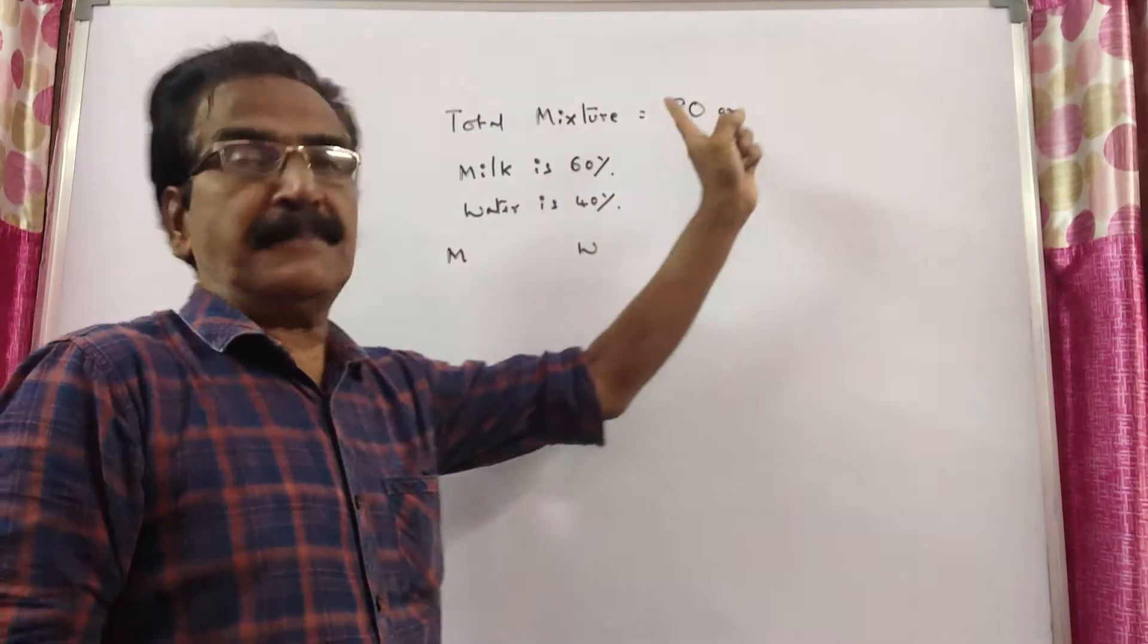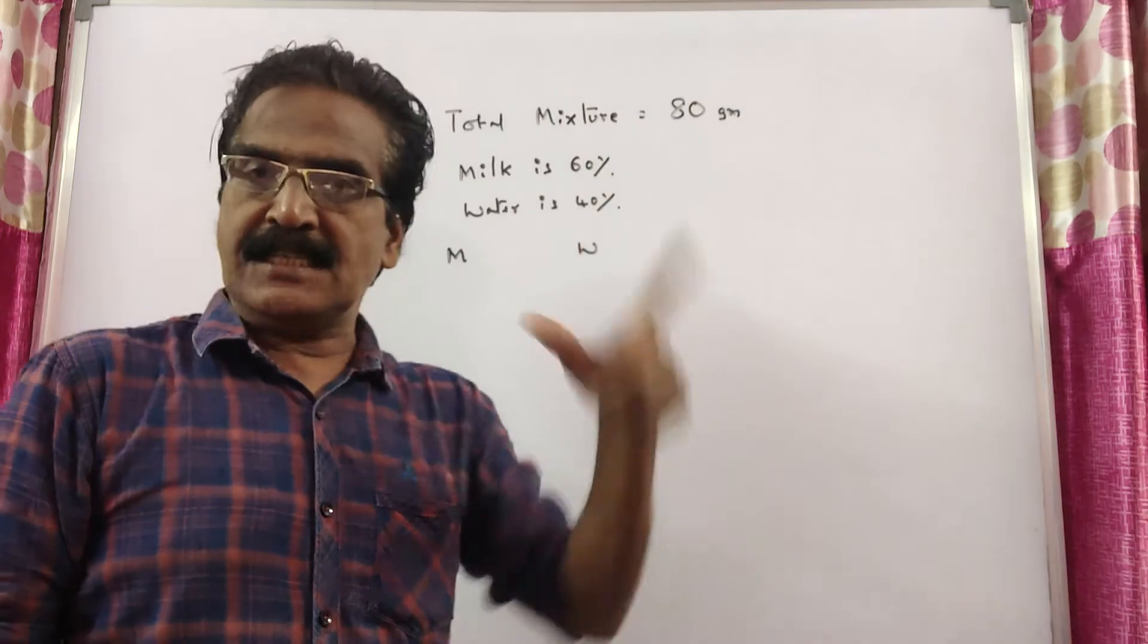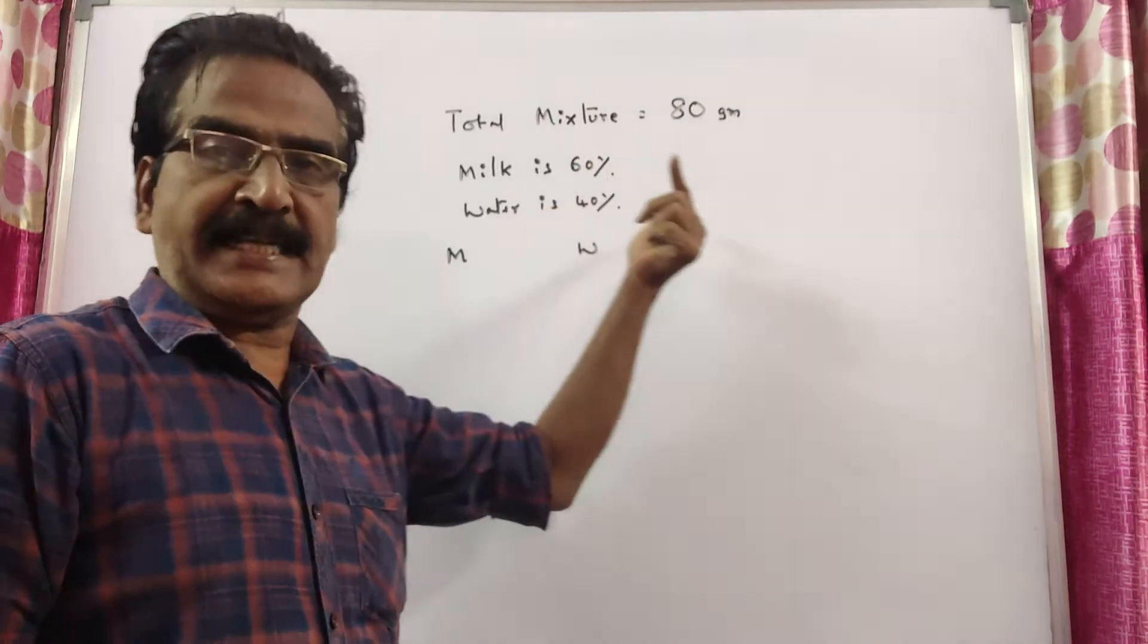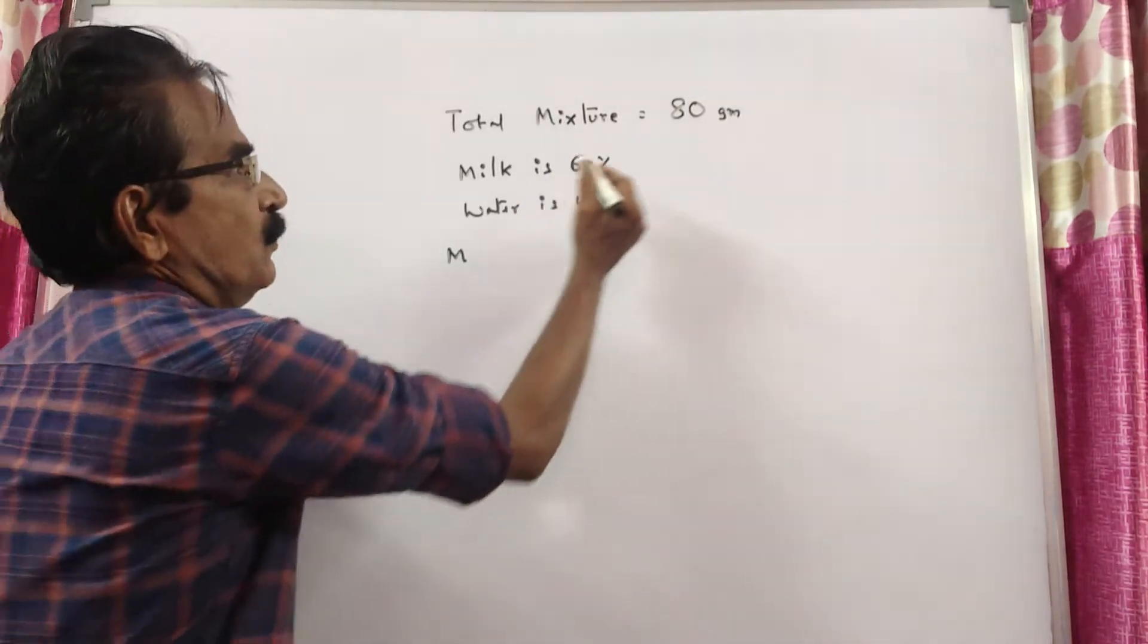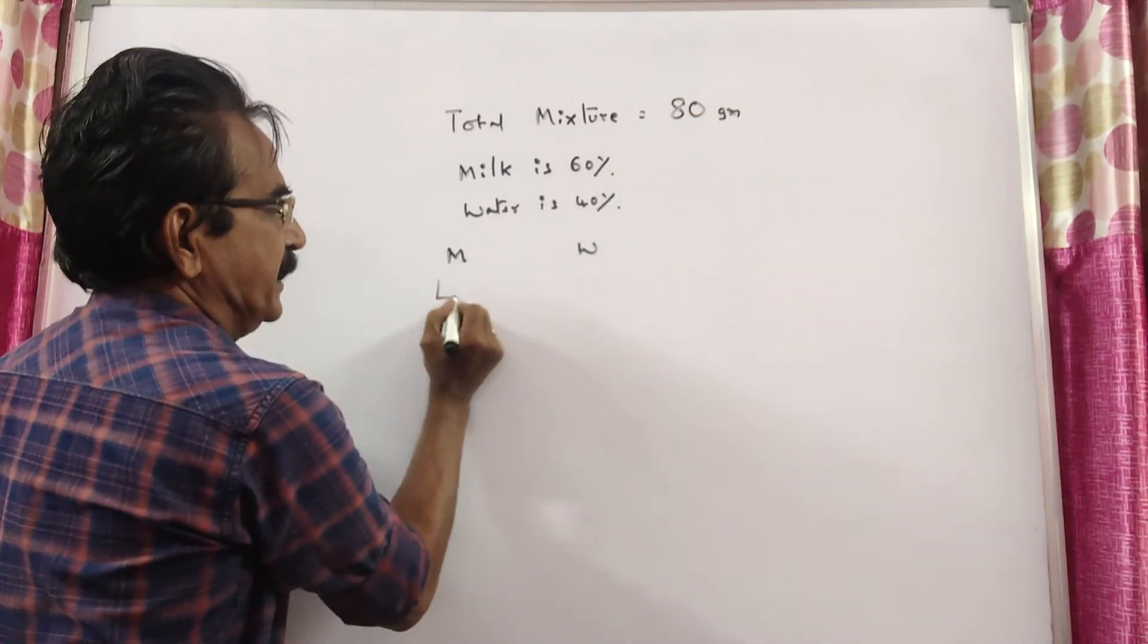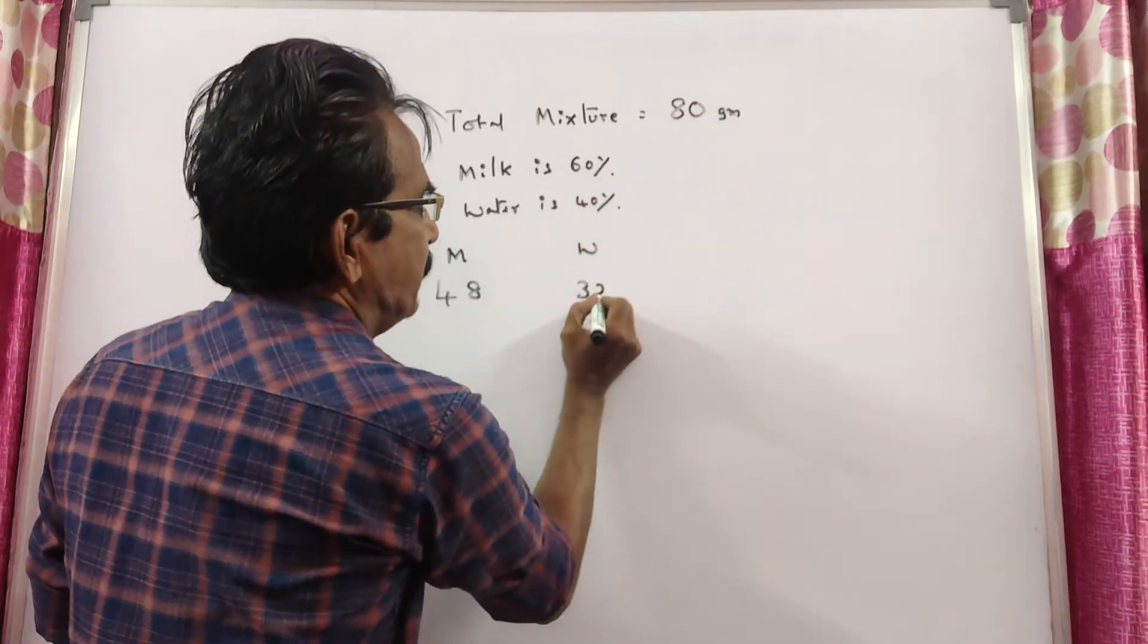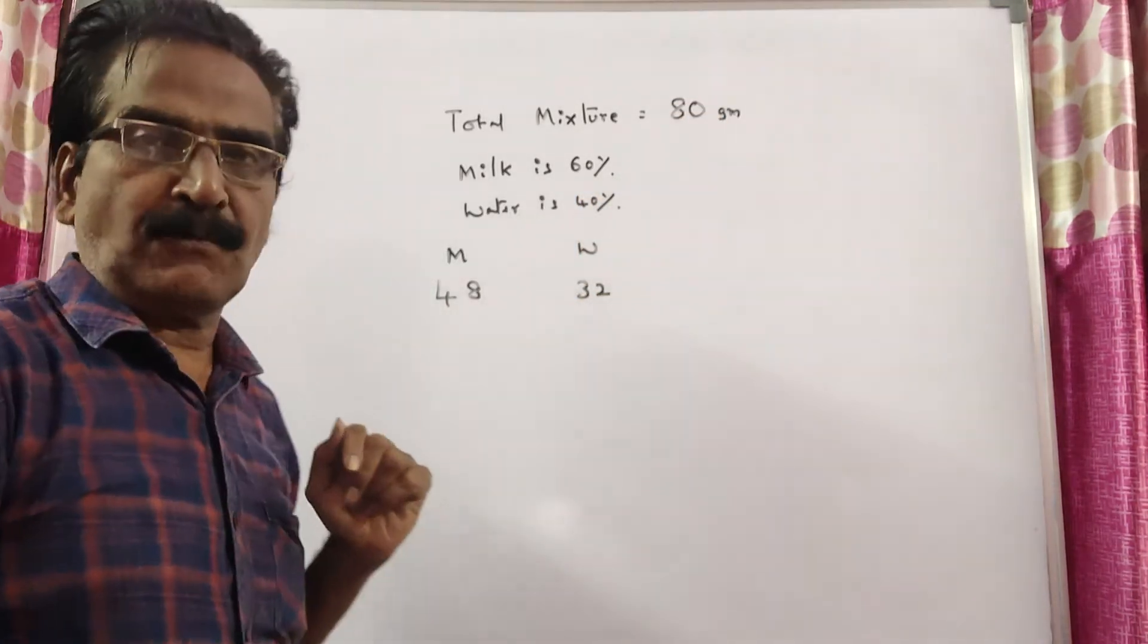It is given that the total mixture is 80 grams of which milk is 60 percent and water is 40 percent. So, 60 percent of 80: 6 times 8 equals 48 grams milk. 40 percent: 4 times 8 equals 32 grams water.